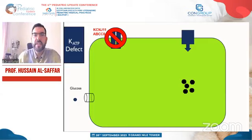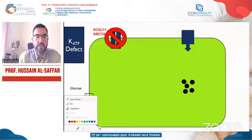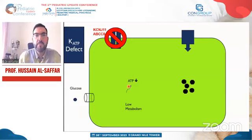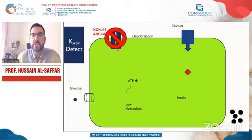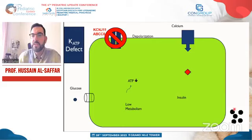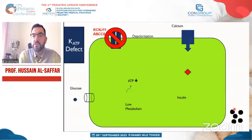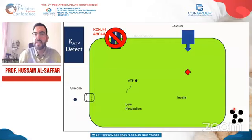With the potassium ATP channel defect, these channels are always closed regardless of low glucose and low ATP production. This causes constant membrane depolarization, calcium influx, and continuous insulin secretion — causing hyperinsulinism. This is worrisome because there is already low glucose, high insulin, and the insulin suppresses ketogenesis, leaving the patient with no fuel — no glucose and no ketones — for important cells like brain cells, putting them at risk of brain damage.